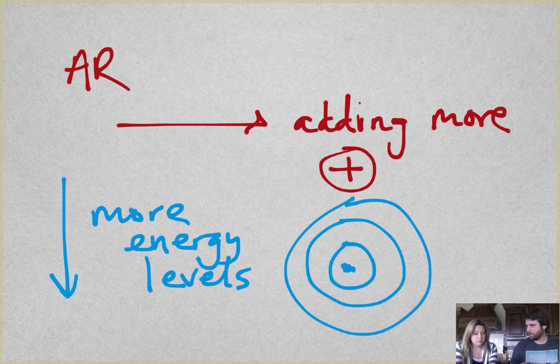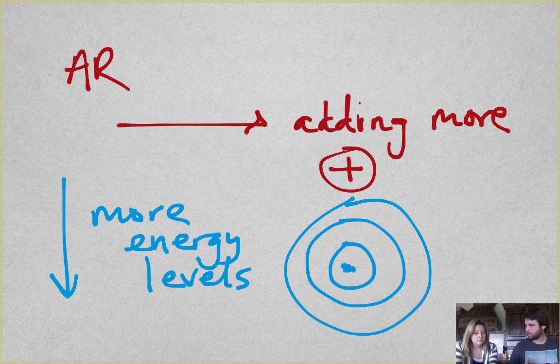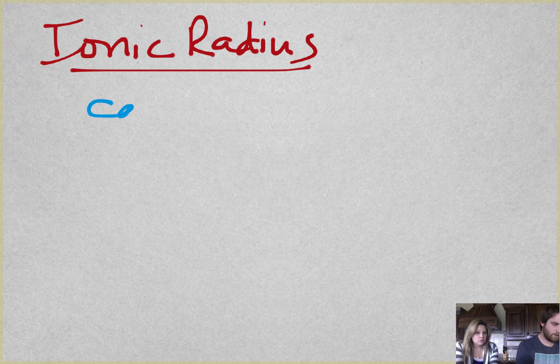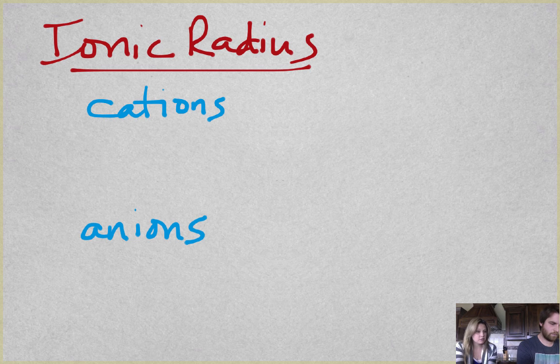So ionic radius is the other one that was a little bit harder to comprehend. For ionic radius, we have cations which lose electrons and anions which gain electrons. What's really important with the cations is that nuclear charge, so my protons are pulling on the electrons. That's where radius comes from.